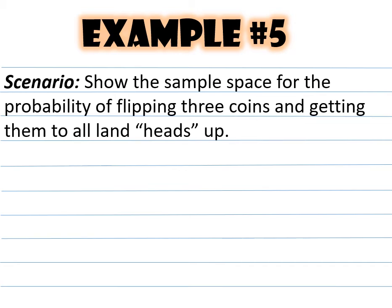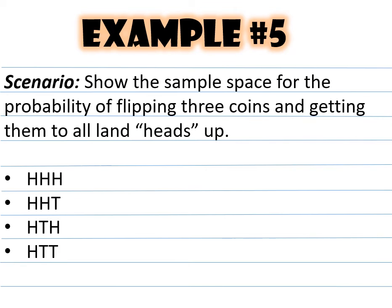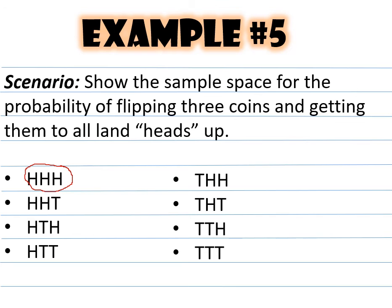Example number five: show the sample space for flipping three coins and getting them all to land heads up. The possible outcomes are: heads-heads-heads, heads-heads-tails, heads-tails-heads, heads-tails-tails, tails-heads-heads, tails-heads-tails, tails-tails-heads, and tails-tails-tails. There is only one positive outcome where all three are heads, out of eight total outcomes, so the probability is 1 out of 8.